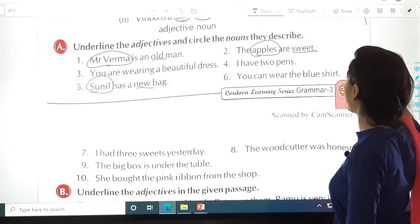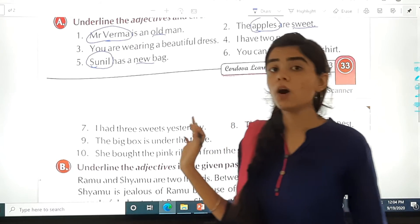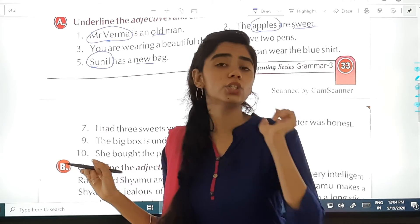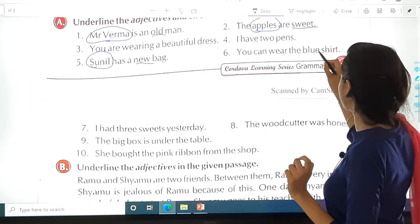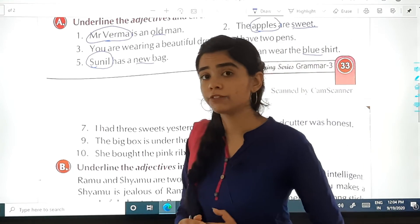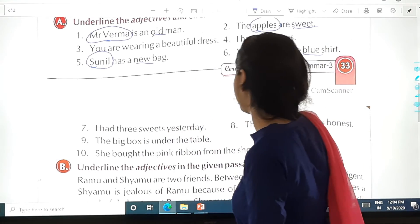You can wear the blue shirt. Now how is the shirt? The shirt is blue. So our adjective would be blue. In this way, you have to solve the remaining sentences.